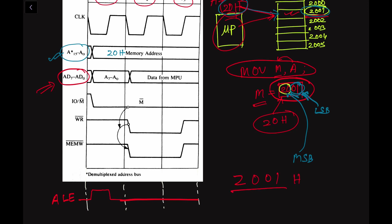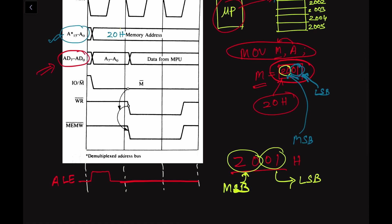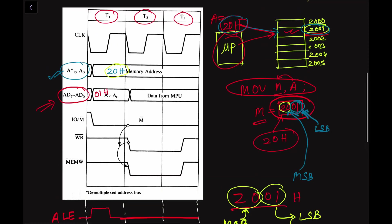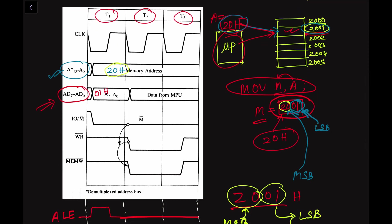The higher order address bus carries 20H, and A7–A0 carries the value 01H. During the first clock cycle, the address-data bus holds 01H. As this is a memory write operation, the IO/M bar signal is sent by the microprocessor to indicate it wants to access the memory unit. To access the memory unit, this IO/M bar signal is zero — an active low signal.